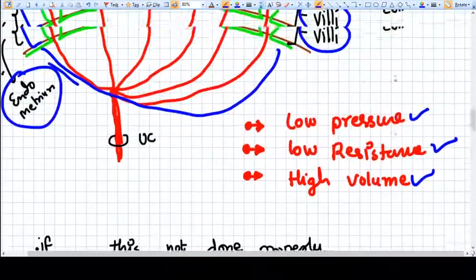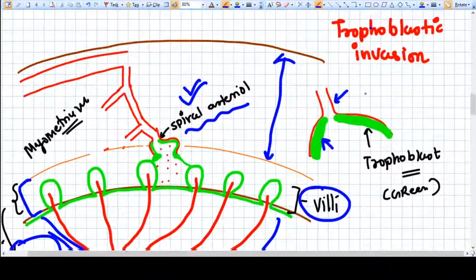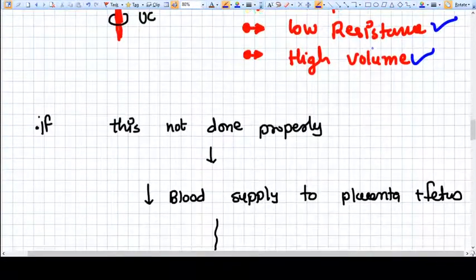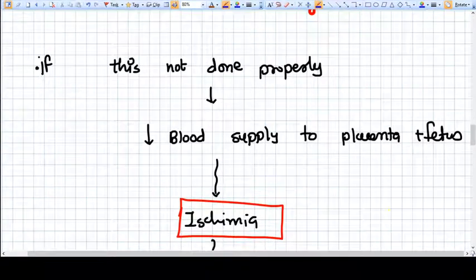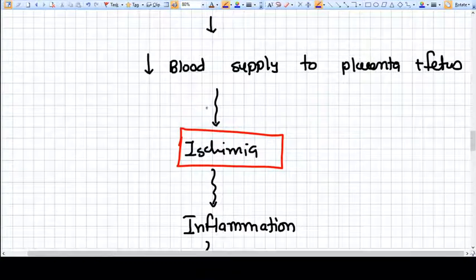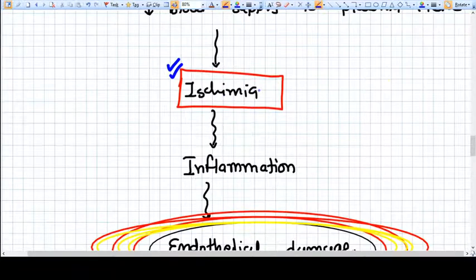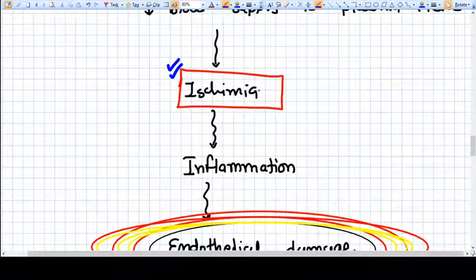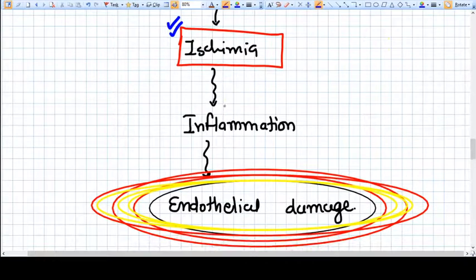So what happens? Blood supply to the placenta and fetus will be decreased and there will be ischemia in the placenta. And whenever there is ischemia, inflammation is triggered. This inflammation will lead to endothelial damage.